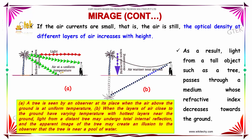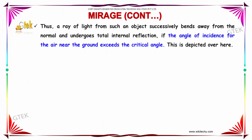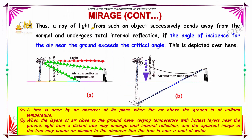As a result, light from a tall object such as a tree passes through a medium whose refractive index decreases towards the ground. Thus, a ray of light from such an object successively bends away from the normal and undergoes total internal reflection if the angle of incidence for the air near the ground exceeds the critical angle.